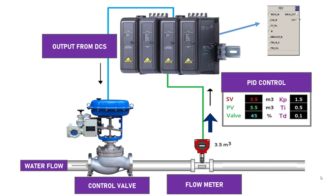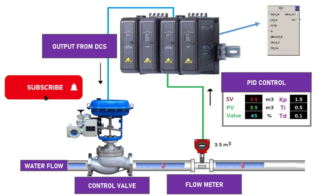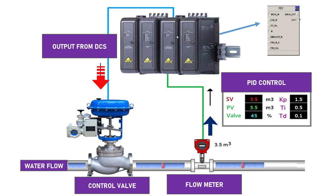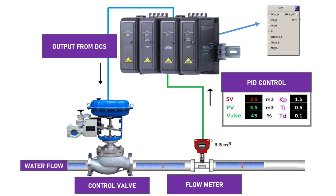In this video, we are going to understand how to write a code to control a control valve using PID in Delta VDCS. Before writing a control program, it's important to understand the control loop. In this example, water enters a pipeline, a control valve regulates the flow, and a flow meter measures it. The flow meter is connected to the analog input card of a Delta VDCS, which connects to the controller.